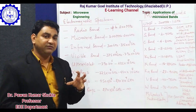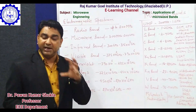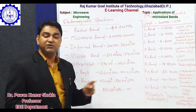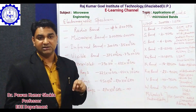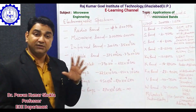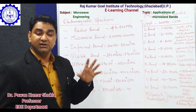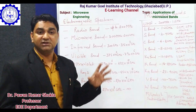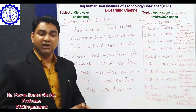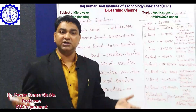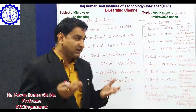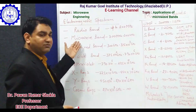Microwave is that specific band of the whole spectrum which is mostly utilized for different satellite communications, radar communications, television communications, and mobile communications. Generally, all modern types of communications are utilizing microwave frequencies.